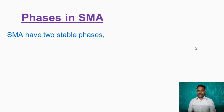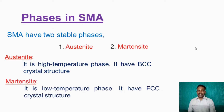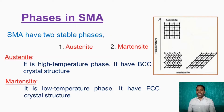The phases in shape memory alloys: shape memory alloys have two stable phases. One is called austenite and another one is called martensite. Austenite is the high temperature phase and has a body-centered cubic structure. Martensite is the low temperature phase and has a face-centered cubic system. At lower temperature, the shape memory alloy exhibits the martensite phase. At higher temperature, it exhibits the austenite phase.